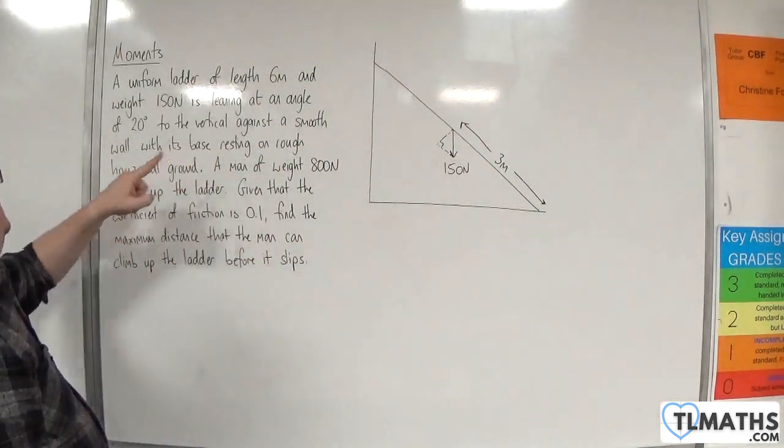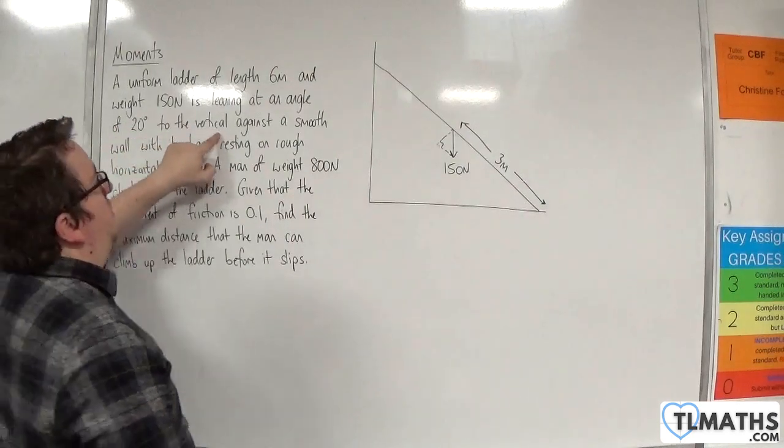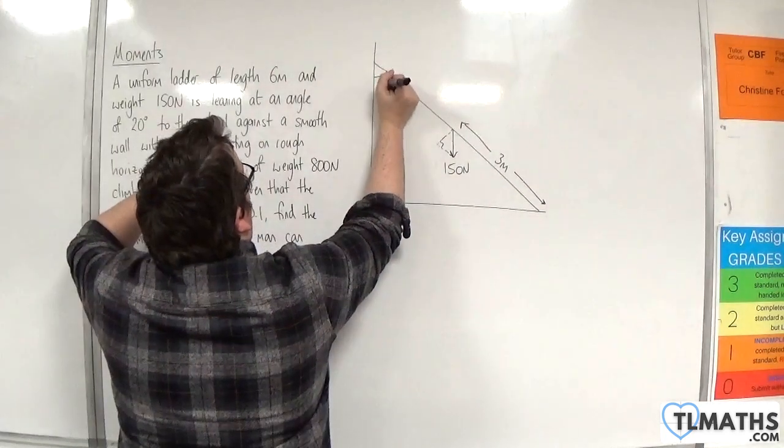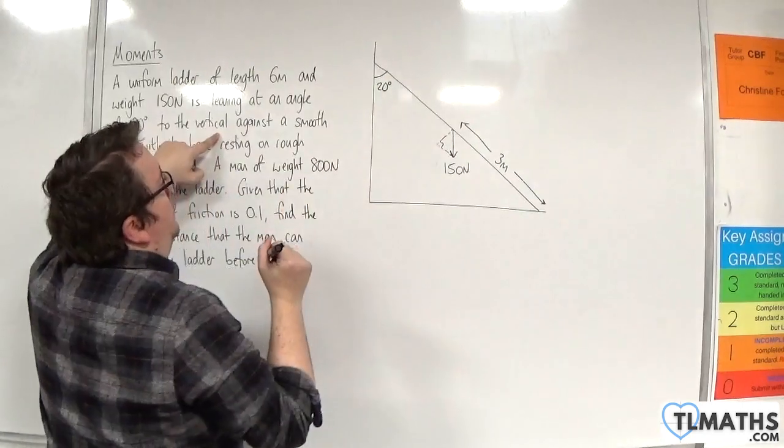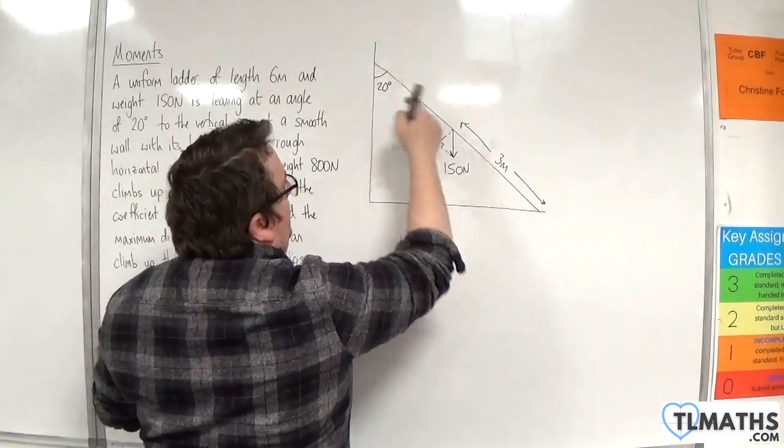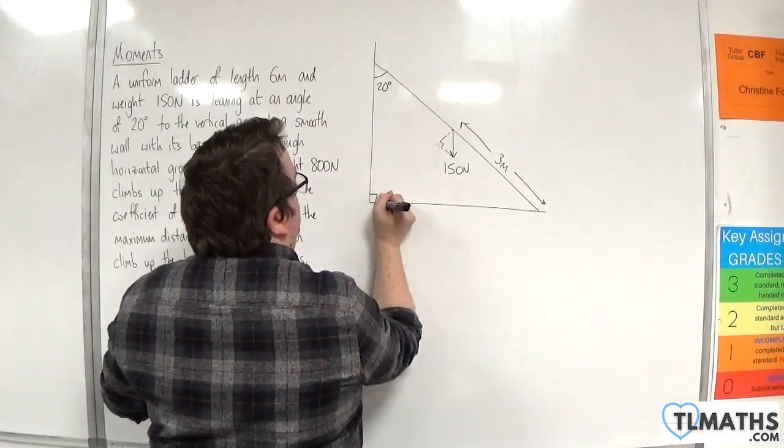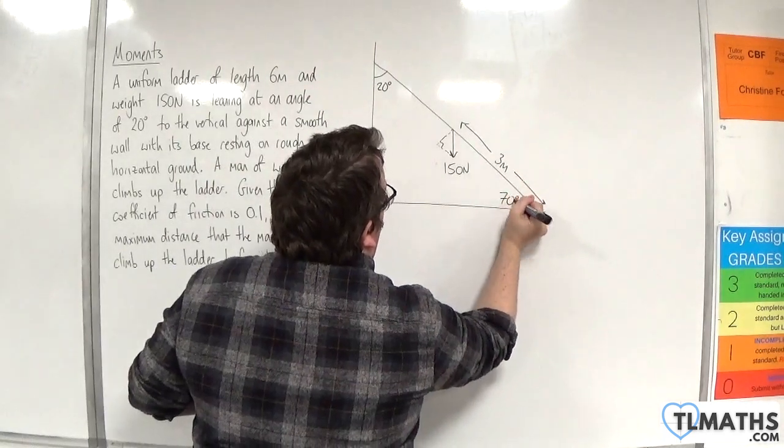It's leaning at an angle of 20 degrees to the vertical. So that means that that angle is 20 degrees. Now if that's 20 degrees, then this angle, with that being a right angle of course, must be 70 degrees.